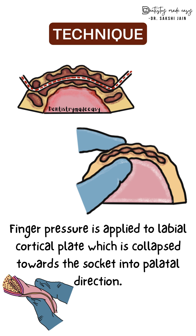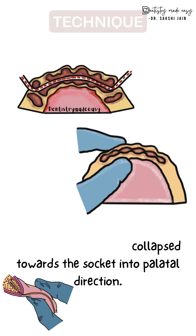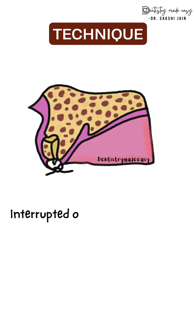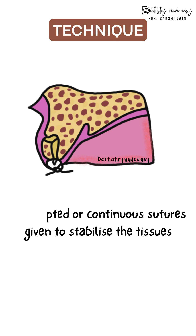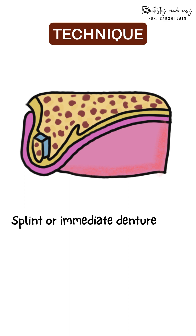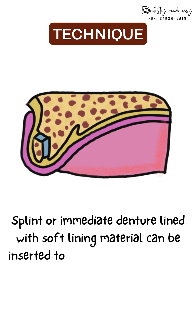The labial and palatal plates come into approximation — this is the disadvantage, as thickness is reduced in the process. If any sharp margins are present at the newly created crest, they are filed with a bone file. Lastly, interrupted or continuous sutures are placed to stabilize the tissues, and a splint or immediate denture lined with soft lining material is inserted to maintain the bony position until initial healing.